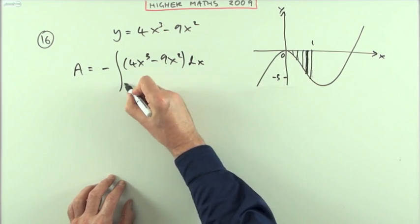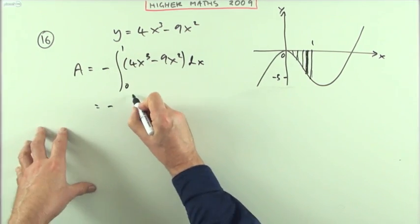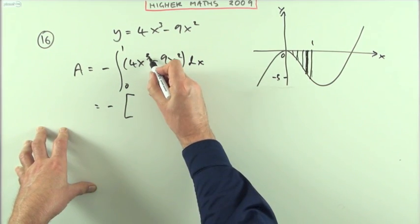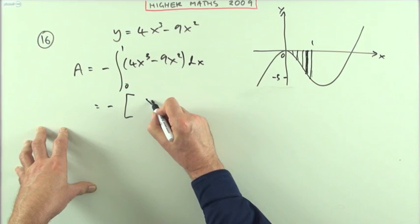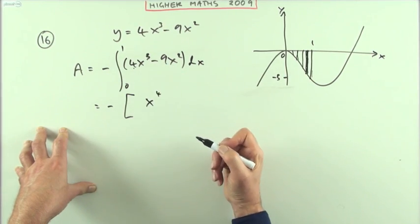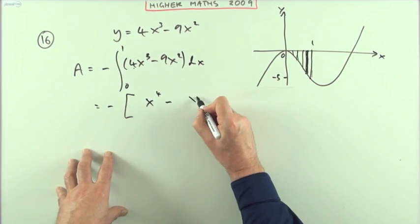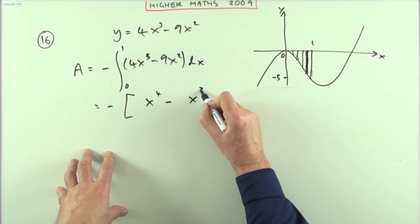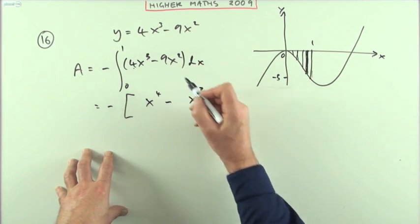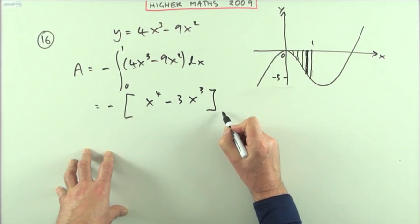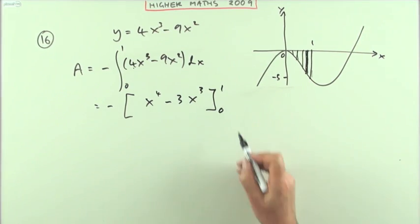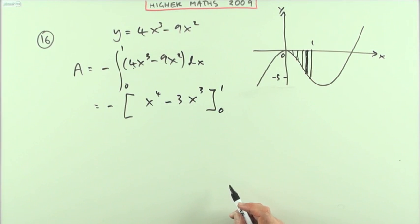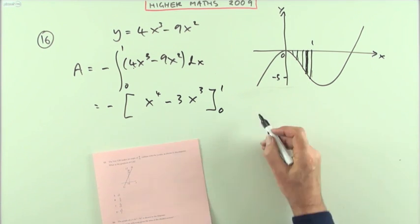So it's going to be the negative of—now carry out the integration, add 1 to the power, divide by the power. Up to 4, divide by 4—well, 4 divided by 4 is 1, so I'll just leave it x⁴. Up to 3, divide by 3—well, 9 divided by 3 is 3. And then evaluated from 1 and evaluated at 0. But that's sufficient for the question because all it says is which of these represents it, so that would be B.